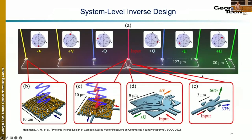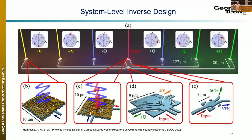Finally, this can all be taken to the system level — not just designing individual devices, but considering how they integrate into a system. This is a Stokes vector receiver, which takes advantage of DSP algorithms for long-haul telecommunication systems but with data-com power requirements. We cascaded all the devices shown earlier — polarization grating couplers, the 90-degree hybrid, and asymmetric splitters — fabricated that on a commercial foundry platform on multiple wafers, and it worked remarkably well. The final device was orders of magnitude smaller than the state of the art, meaning a company could increase yield by orders of magnitude. The capability of topology optimization extends beyond the device level to the system level.